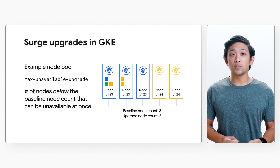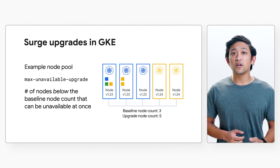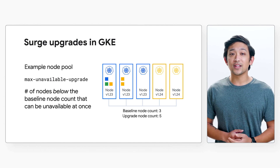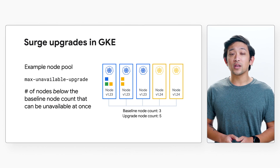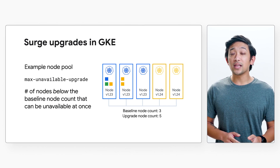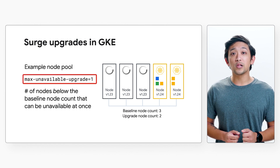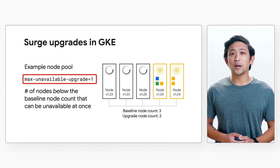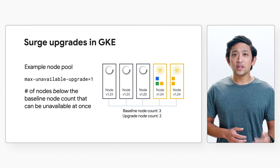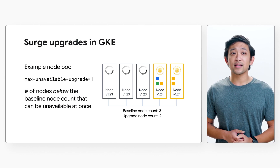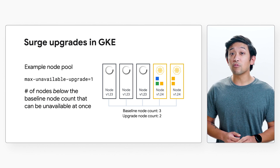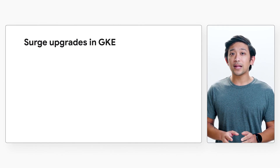On the other side of the coin, we have max unavailable upgrade as a tunable field. This is the number of nodes below the baseline node count that can be unavailable at any given time. In the default upgrade strategy, this value is set to zero, meaning the node pool never drops below the ready and available baseline node count. If we set this to one, the upgrade can turn down nodes at a rate that allows it to fall one node below the baseline count, helping speed up upgrades by cordoning and draining nodes faster. In this example, we left off with five nodes — two that surged above the baseline — meaning our upgrade could now cordon and drain up to three nodes at the same time. The faster nodes are cordoned and drained, the more pods are moving around and being rescheduled, which can be slightly disruptive but does speed up the upgrade process.